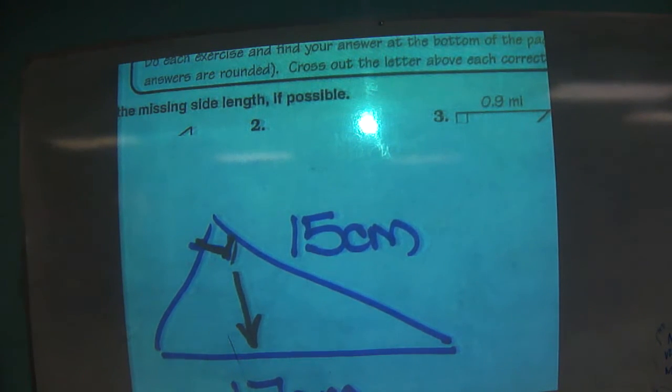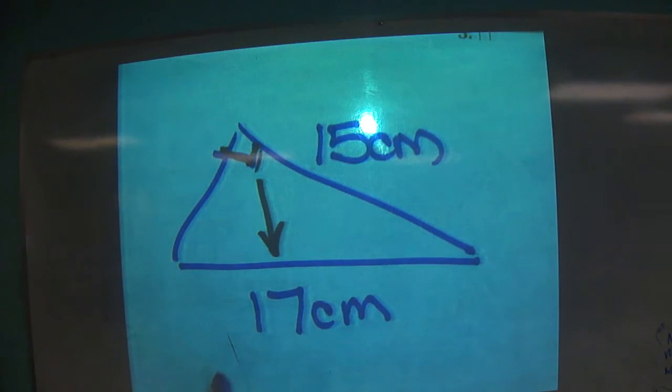So when you put it together, you say, oh, I have A, and I can square it, plus, do I have B? No, I don't. So there's B squared, equals C squared.